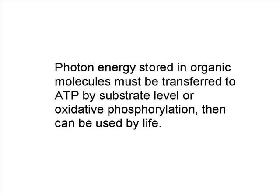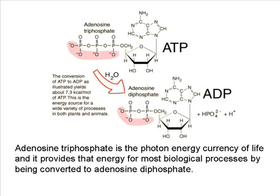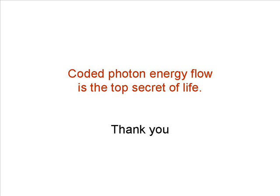Photon energy stored in organic molecules must be transferred to ATP by substrate-level or oxidative phosphorylation, then can be used by life. Adenosine triphosphate is the photon energy currency of life, and it provides that energy for most biological processes by being converted to adenosine diphosphate. Coded photon energy flow is the top secret of life.